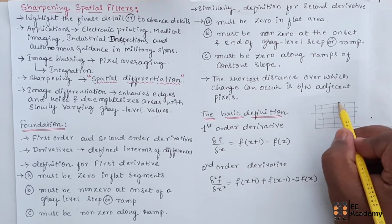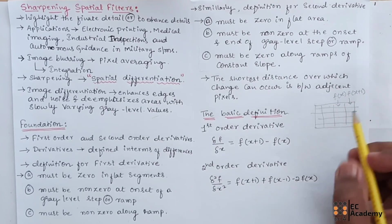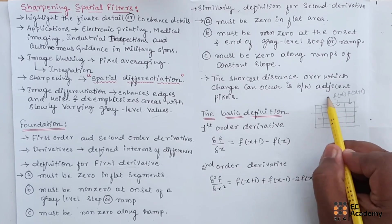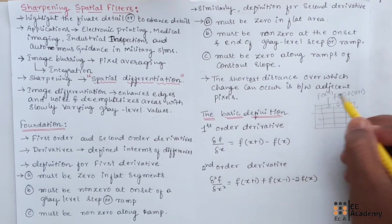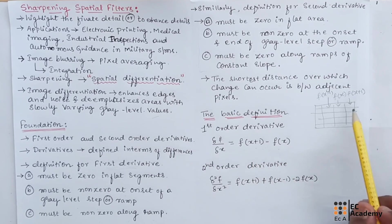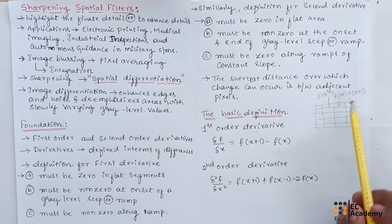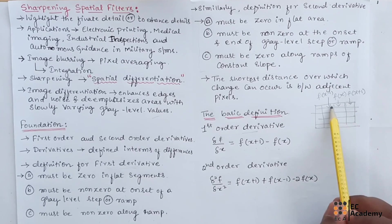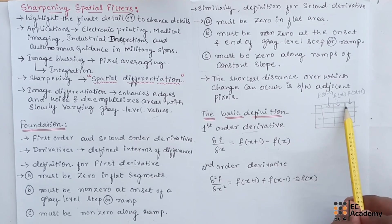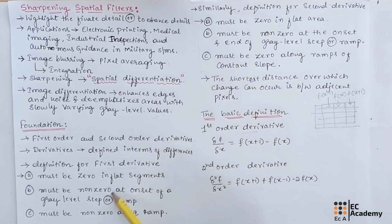For example, if we consider a pixel as f(x), the next pixel value will be f(x+1), and the previous pixel value is f(x−1). We can use these values in the definitions. f(x+1) minus f(x) gives the first-order derivative. For the second-order derivative, f(x+1) plus f(x−1) minus 2f(x) uses these three values. These two definitions satisfy the conditions of first-order and second-order derivatives.